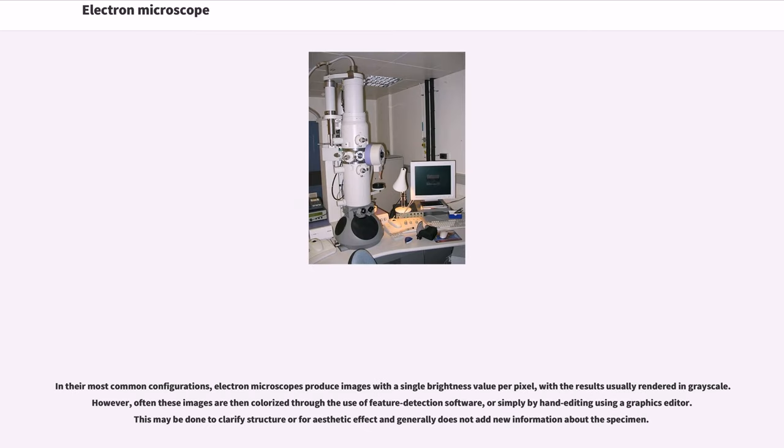In their most common configurations, electron microscopes produce images with a single brightness value per pixel, with the results usually rendered in grayscale. However, often these images are then colorized through the use of feature detection software, or simply by hand editing using a graphics editor.